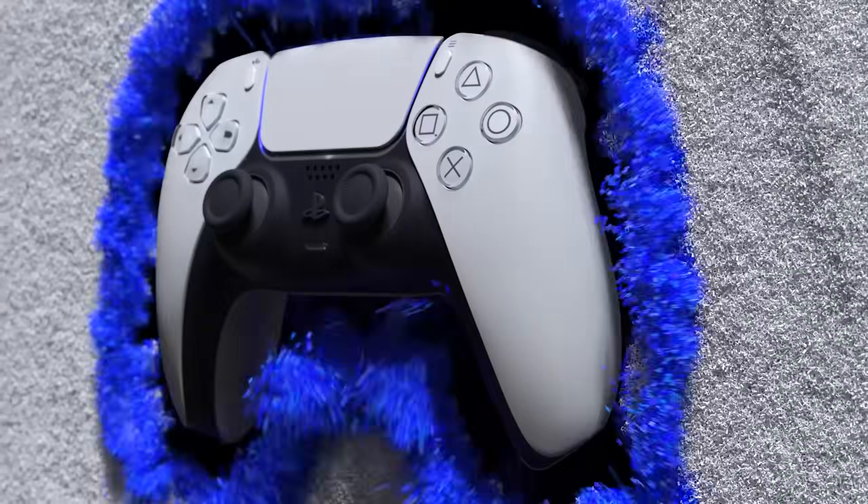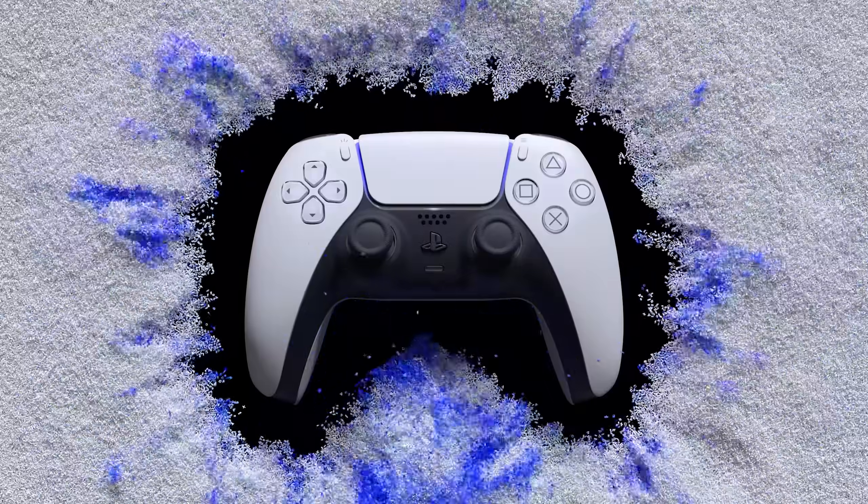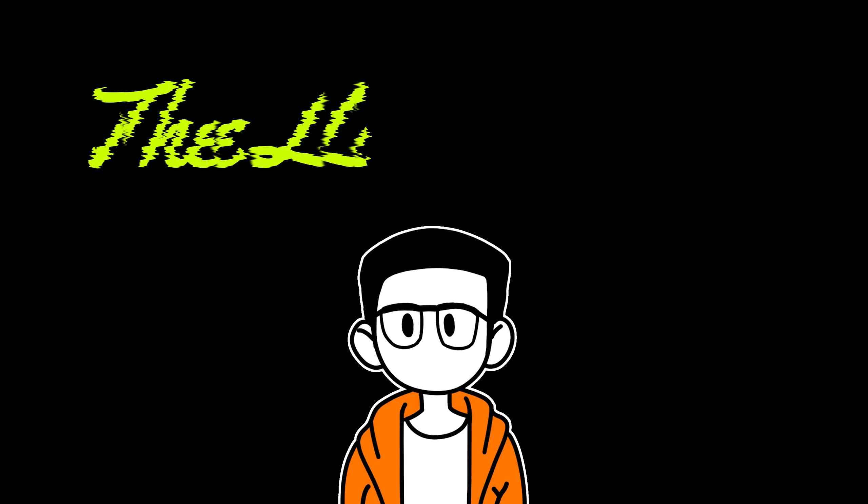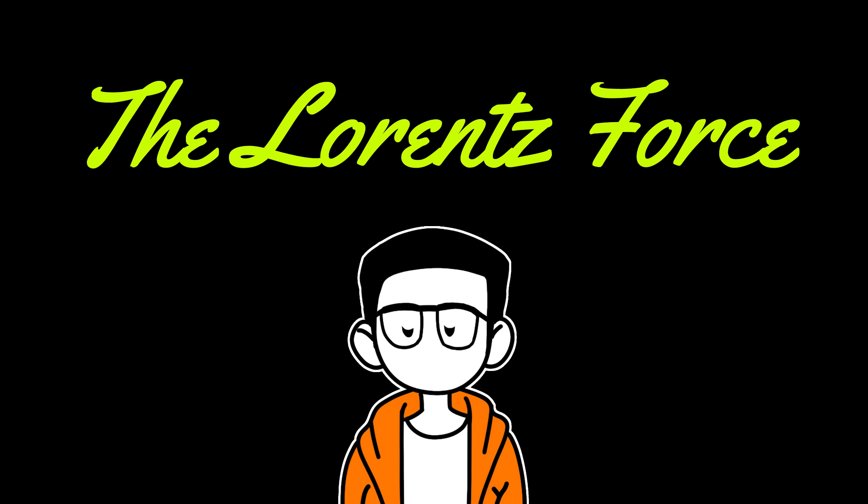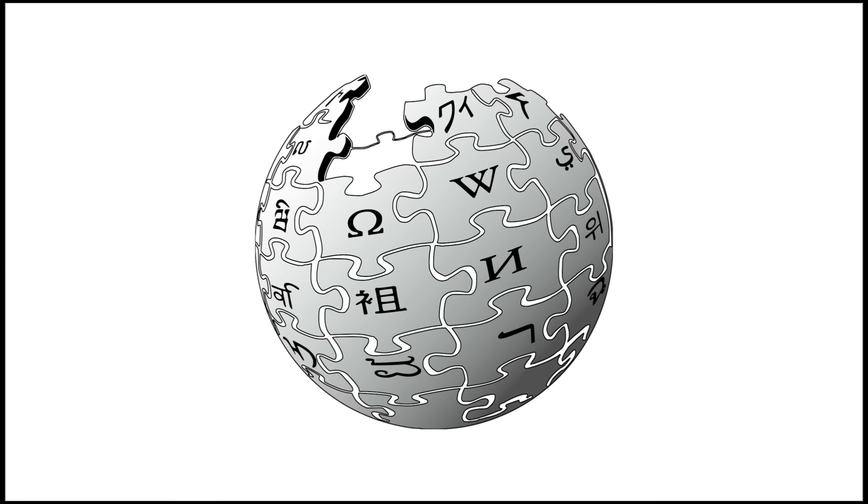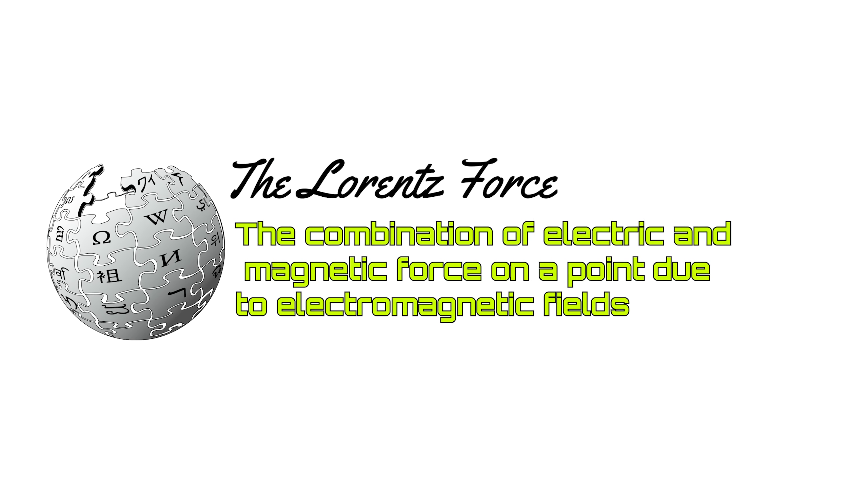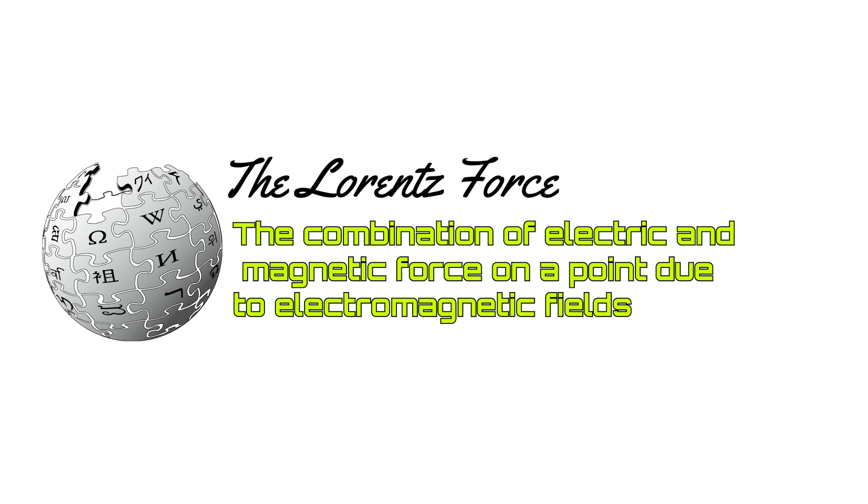But before we get ahead of ourselves, let's define exactly how these actuators take advantage of this situation. You see, in electromagnetic physics there's something called a Lorentz force, and its definition is pretty easy to comprehend on paper. According to Wikipedia, a Lorentz force is simply the combination of electric and magnetic force on a point due to electromagnetic fields, which is easy enough to understand because it basically simplifies to a force created by the phenomena of electromagnetism.